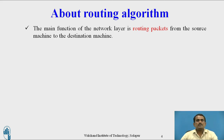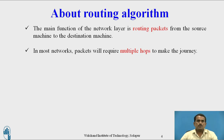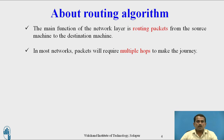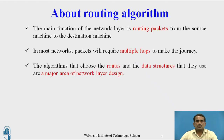Regarding routing algorithms, the main function of the network layer is routing packets from the source machine to the destination machine. Using the network layer concept, routers are used to transfer the packets. In most networks, packets will require multiple hops to make the journey — that is, multiple paths are necessary to transfer packets if one path is not working.